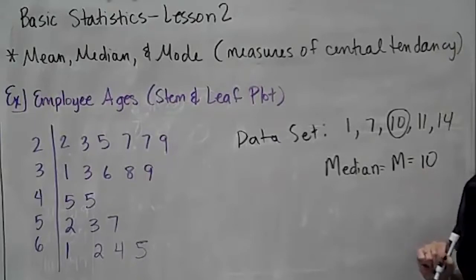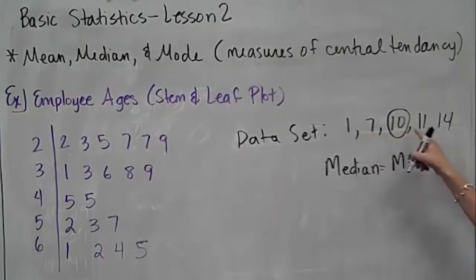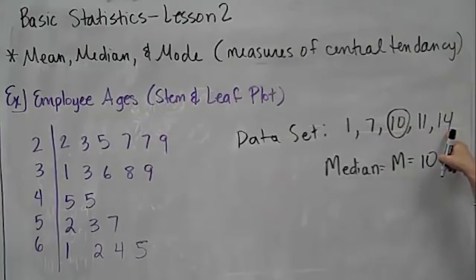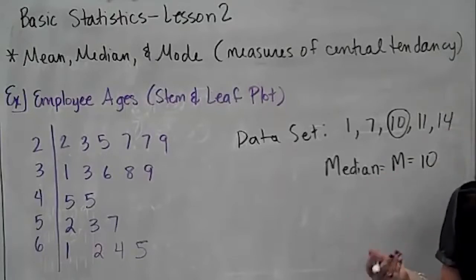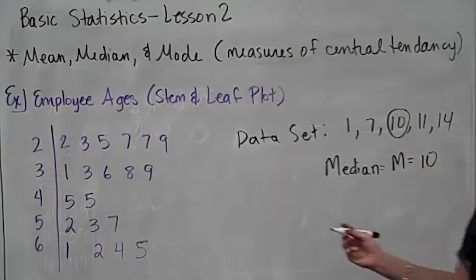Finding the number in the middle when you have an odd N value is very easy. N in this case would be five — you have five values. So if N is odd, you're going to have one number right in the middle.